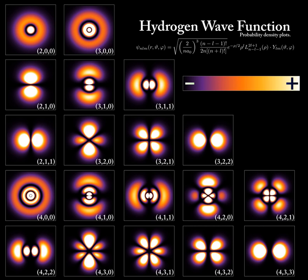In quantum mechanics, it refers to a discrete unit assigned to certain physical quantities such as the energy of an atom at rest. The discovery that particles are discrete packets of energy with wave-like properties led to the branch of physics dealing with atomic and subatomic systems which is today called quantum mechanics. It underlies the mathematical framework of many fields of physics and chemistry, including condensed matter physics, solid-state physics, atomic physics, molecular physics, computational physics, computational chemistry, quantum chemistry, particle physics, nuclear chemistry, and nuclear physics.